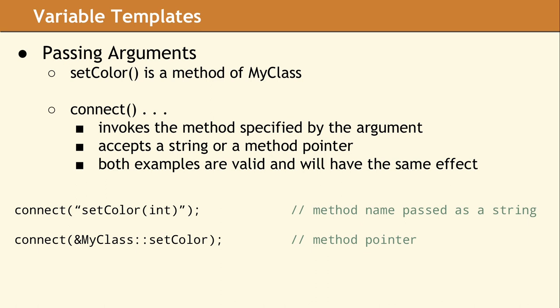To simplify the use case, we're going to reduce the connect arguments to just the slot method. The slot method will be invoked when the connection is triggered.